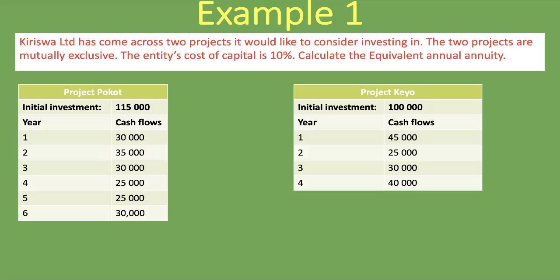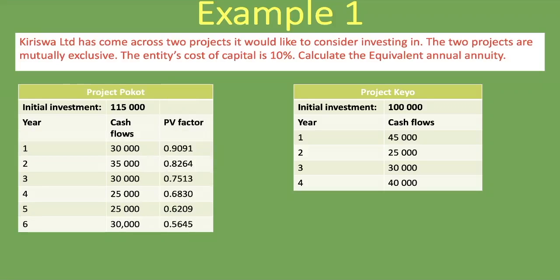We're going to use the table. With a cost of capital of 10%, we look up the present value factor for each specific year from year one all the way to year six. I've already looked them up — here they are. In the net present value lesson linked in the description below, we go into this in great detail on how to calculate NPV using the table.